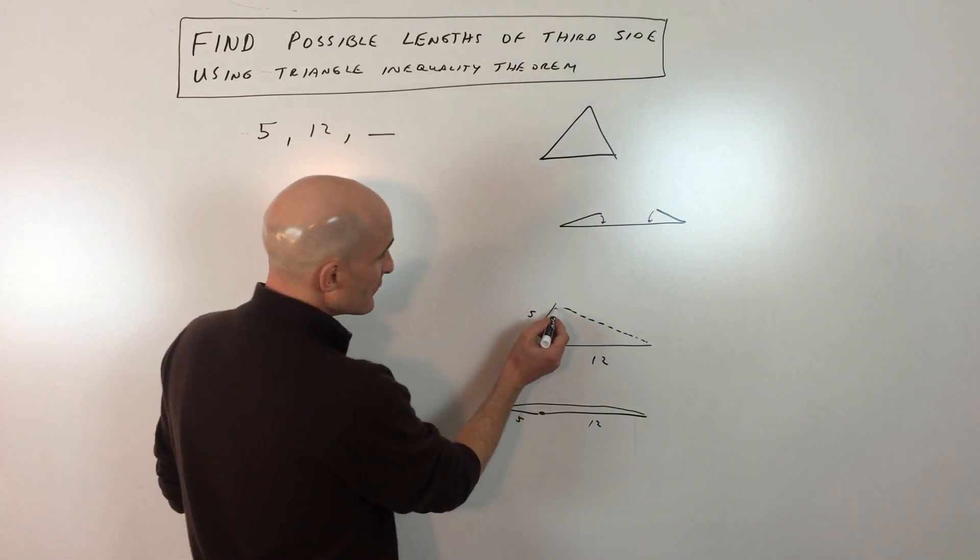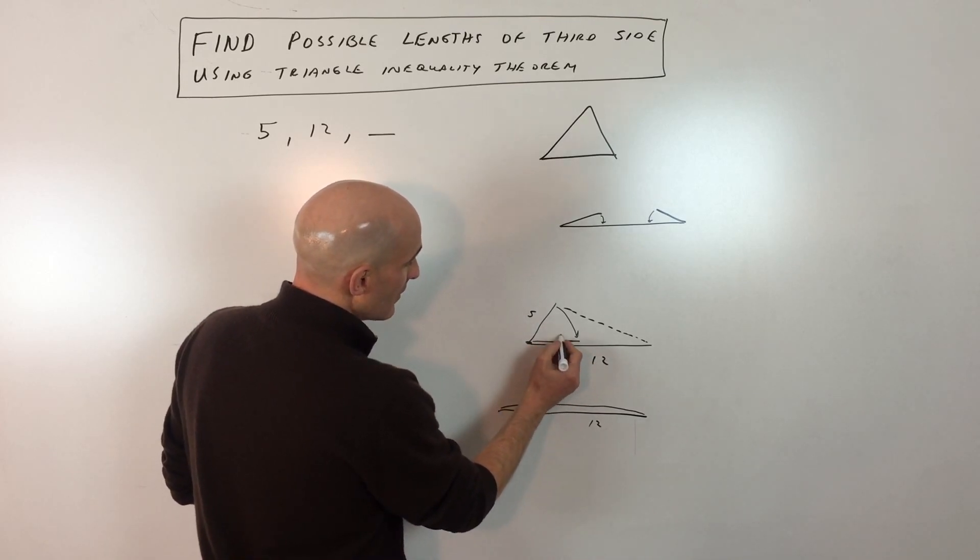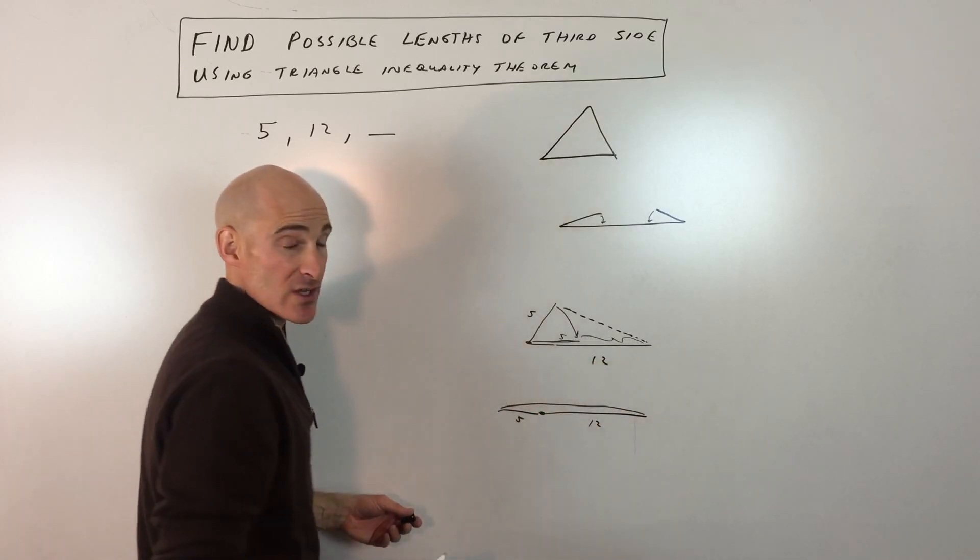Now, the other scenario is if we were to take this side here and rotate it down like this, so that 5 is like right here, now it only has to span this distance from here to here, which is only going to be 7 units.